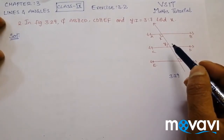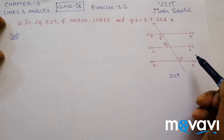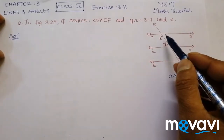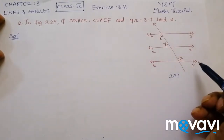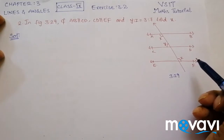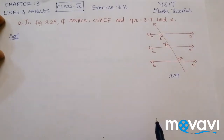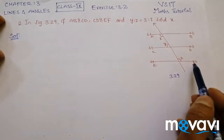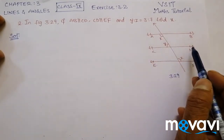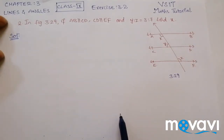What they have given is AB is parallel to CD and CD is parallel to EF. This means AB will be parallel to EF. Because lines which are parallel to the same line are parallel to each other. This line is parallel to CD and this line is also parallel to CD. Therefore AB will be parallel to EF.